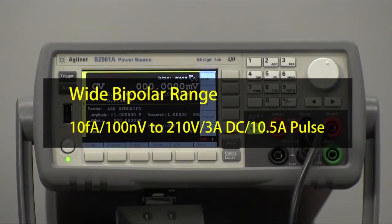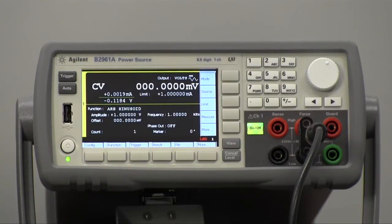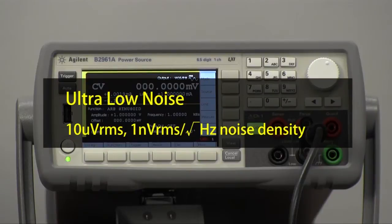Also, you can go up to three amps DC or ten and a half amps pulsed. Also, it's got an extremely low noise floor. You can actually have a 10 microvolt RMS noise floor and the noise dependency versus frequency is one nanovolt divided by the square root of the frequency.